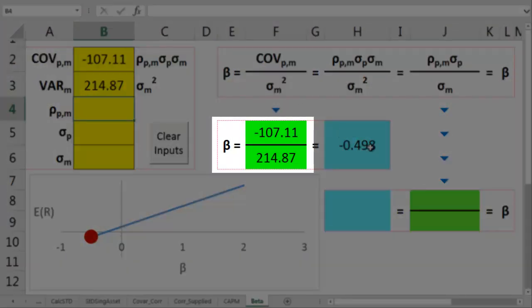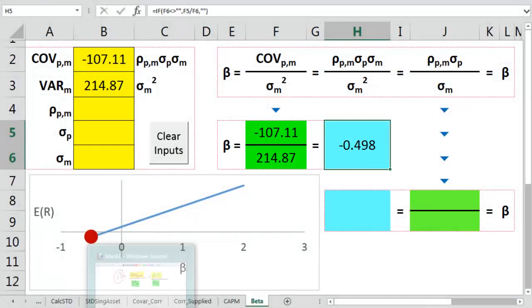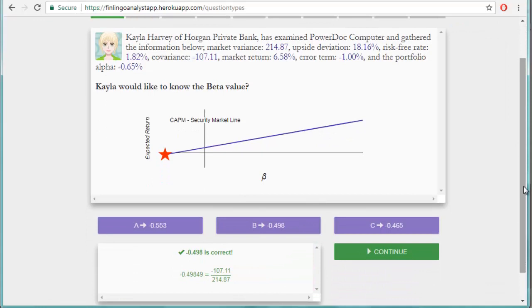we divide the covariance by the market variance, and this gives us a beta of minus 0.498. Let's click on Finlingo to check if we're correct. Excellent news!